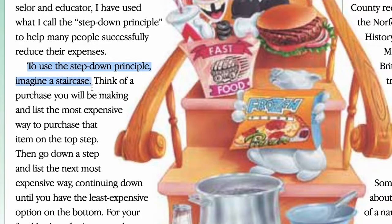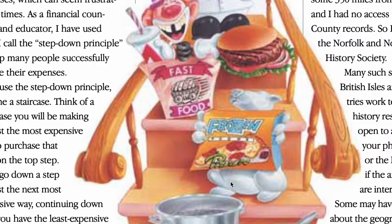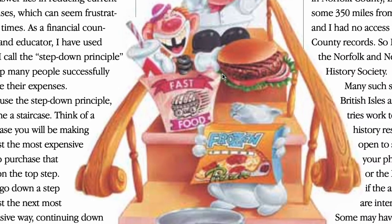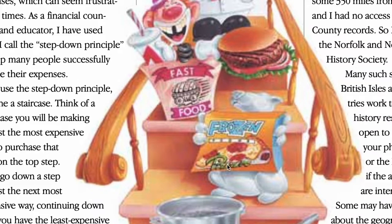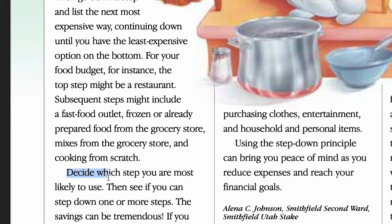Now let's read the first sentence of the second paragraph: 'To use the step down principle, imagine a staircase.' From this sentence, we can say the second paragraph is about a comparison or analogy of the step down principle and a staircase — that is the correct answer. Now you can take a look at the picture because it is available. This is the staircase, and you can see some food. By looking at the picture, we can say that food is part of the step down principle. Now let's look at the first sentence of the third paragraph: 'Decide which step you are most likely to use.' The word 'step' connects to the staircase, so we can look at the picture again and make a connection.